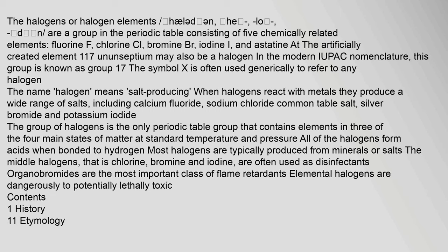The name halogen means salt-producing. When halogens react with metals, they produce a wide range of salts, including calcium fluoride, sodium chloride (common table salt), silver bromide, and potassium iodide. The group of halogens is the only periodic table group that contains elements in three of the four main states of matter at standard temperature and pressure. All of the halogens form acids when bonded to hydrogen.